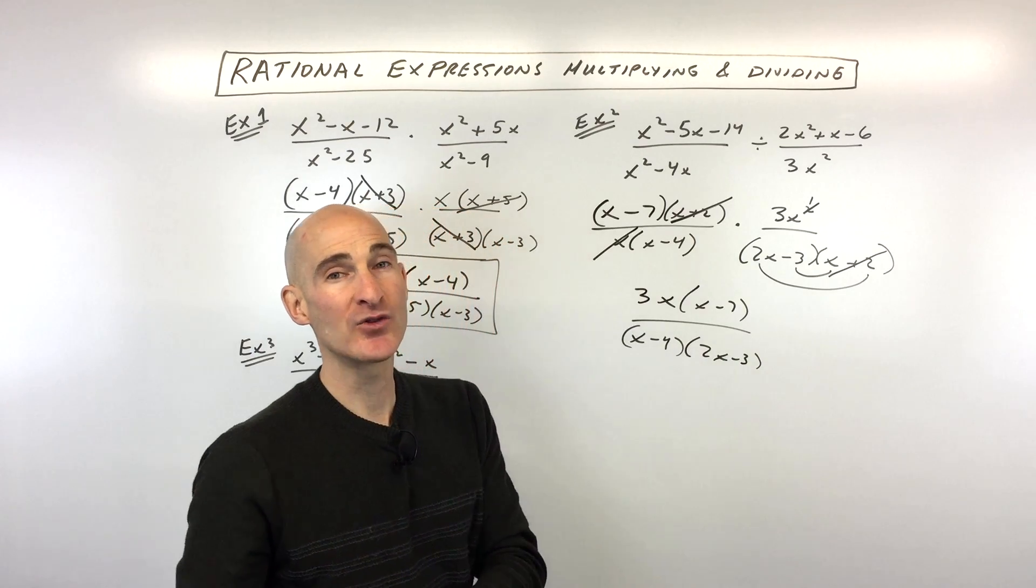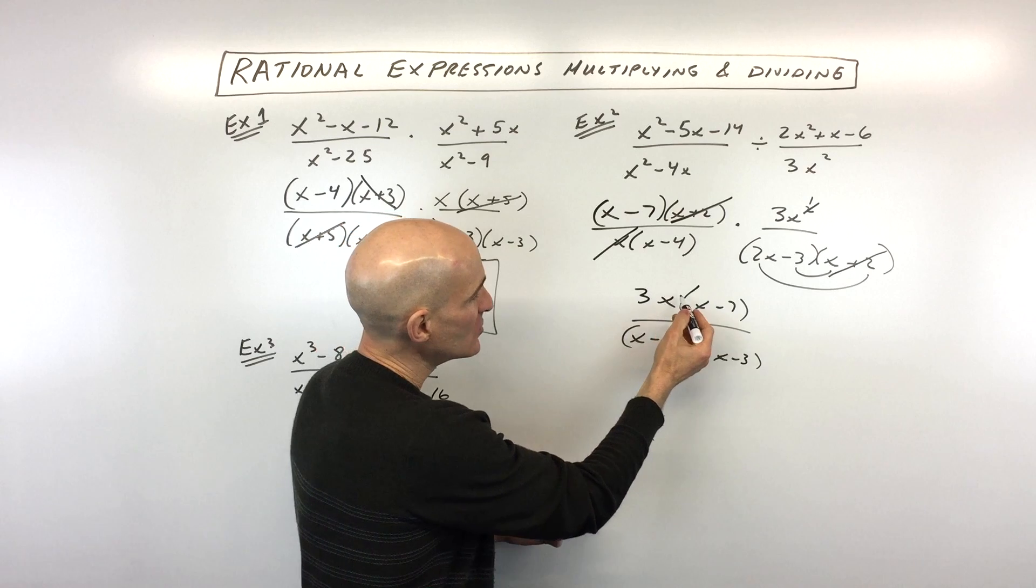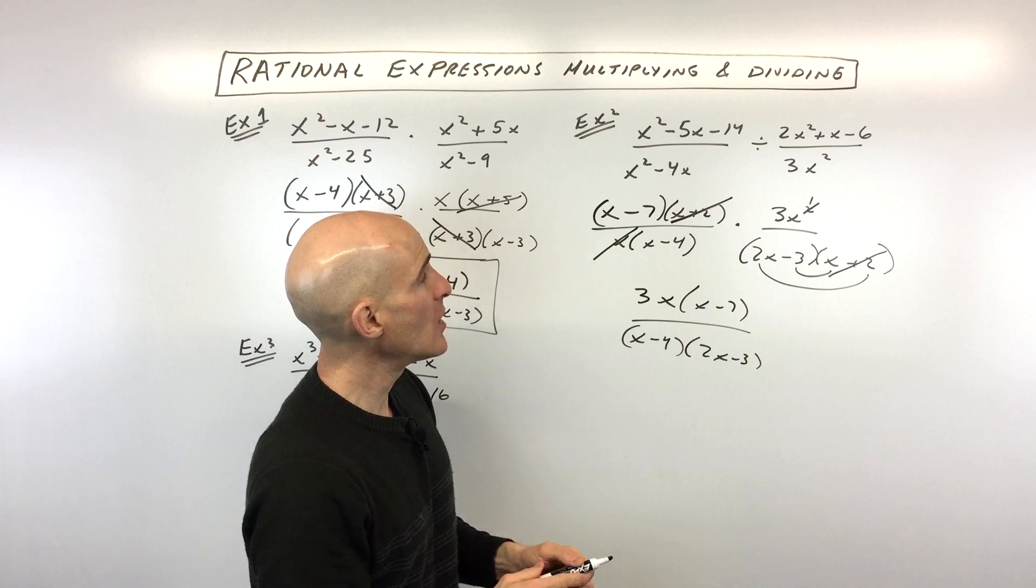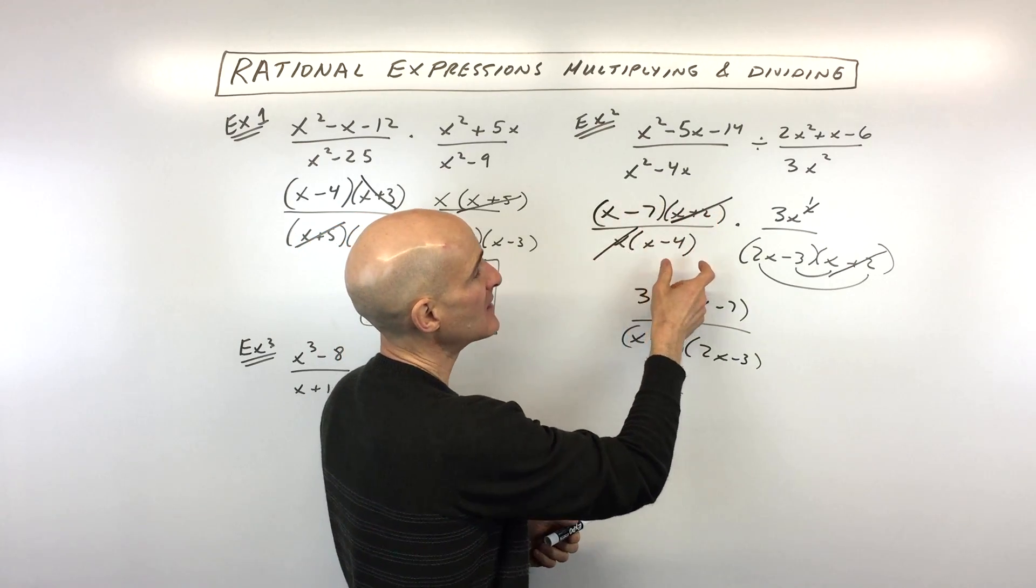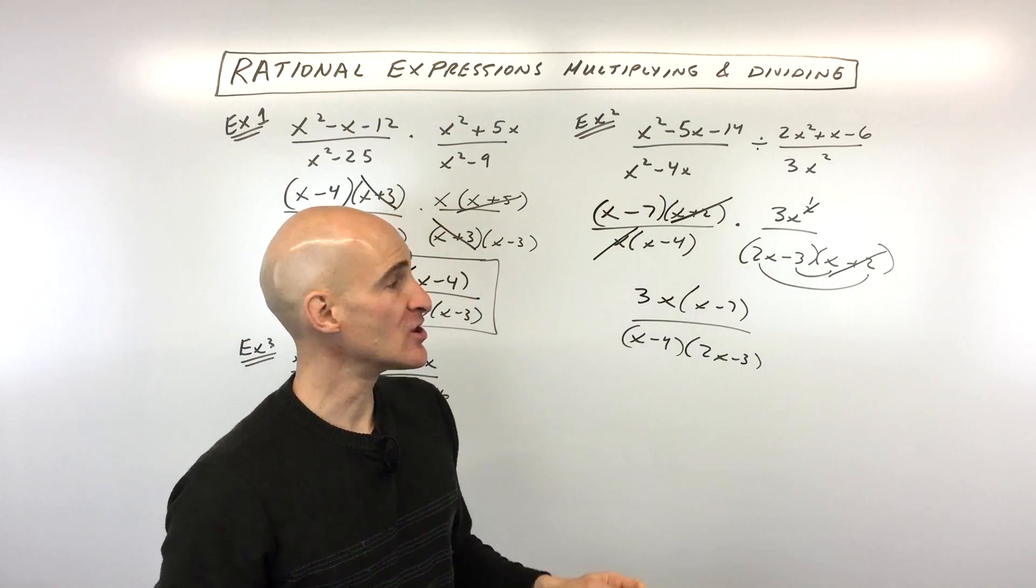Now, I just want to address a question that I know some students have in their mind right now. And that's that, Mario, how come I can't just reduce this x with, like, this x? And that's a good question. You can only do this reducing when the factors are multiplied together and you're canceling top and bottom. That's really like dividing. Multiplying and dividing are inverses of each other.